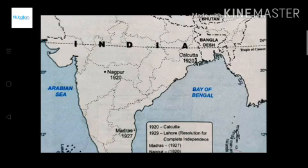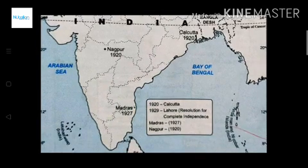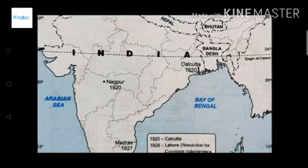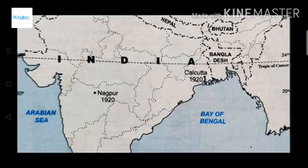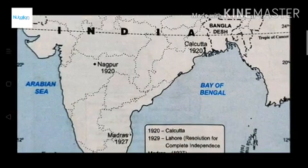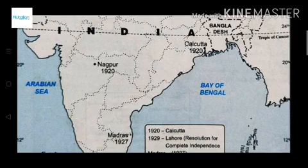In Class 10th we have only 4 sessions to study, and they are all from 1920 onwards. The first is the Kolkata session and the second is the Nagpur session. Kolkata is on the eastern coast, and Nagpur 1920 is in Maharashtra, near Madhya Pradesh.